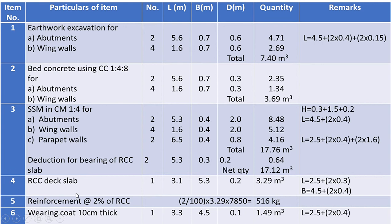Item number four: RCC deck slab. The length equals width of stream plus 2 times bearing on each abutment, that is 2.5 + 2 × 0.3 = 3.1 meters. Breadth of deck slab equals width of roadway (4.5 m) plus 2 times width of wing wall (2 × 0.4 m), giving a total width of 5.3 meters. Thickness of slab is 0.2 meters. Quantity of deck slab is 3.29 cubic meters.